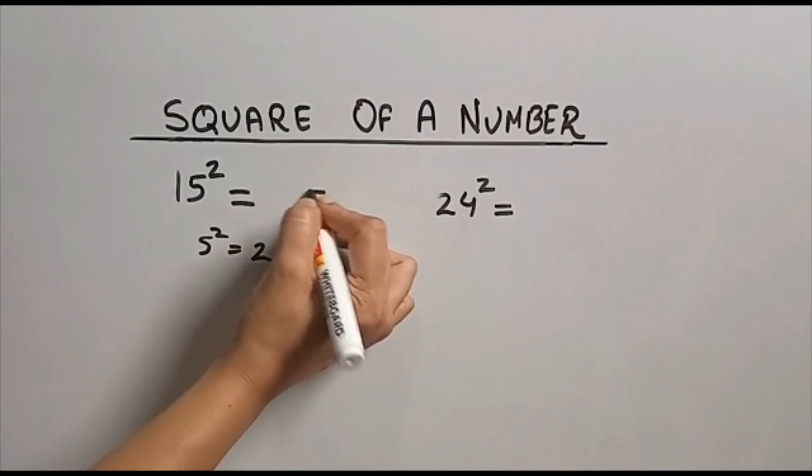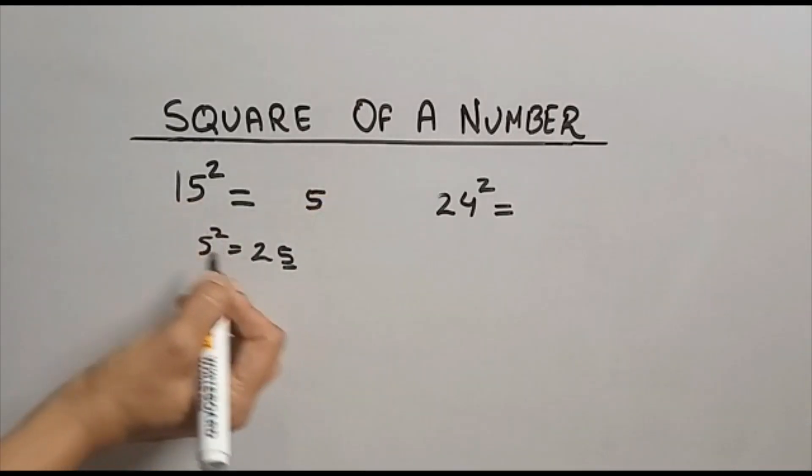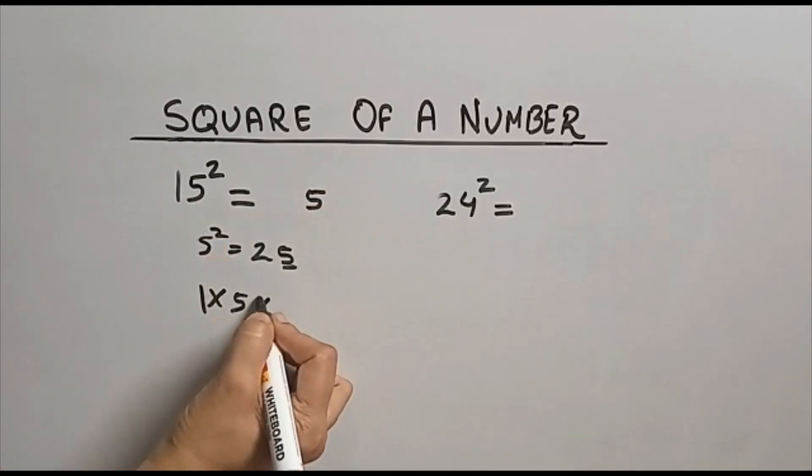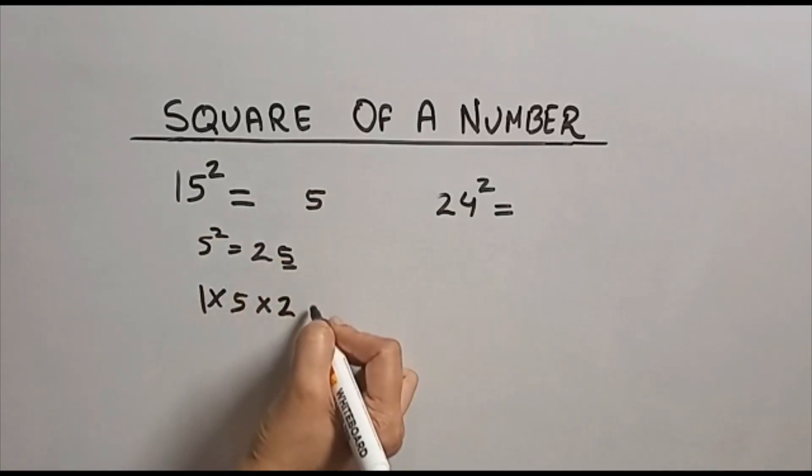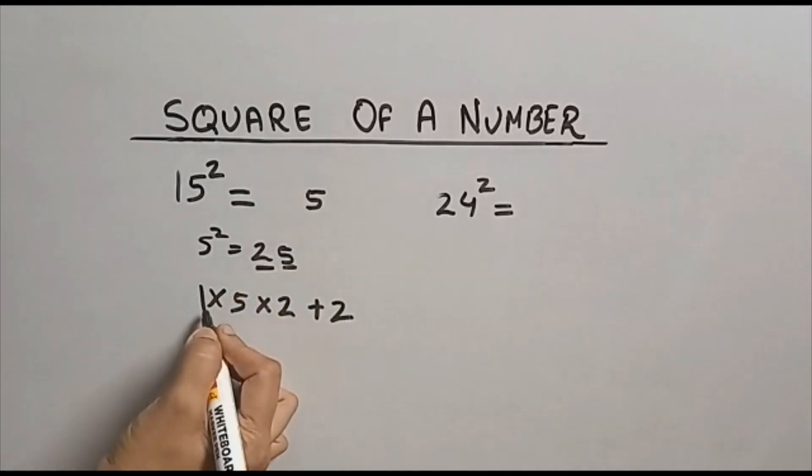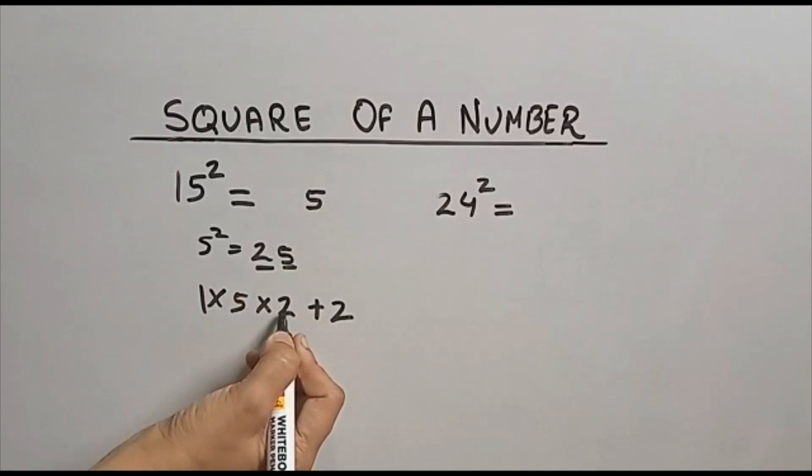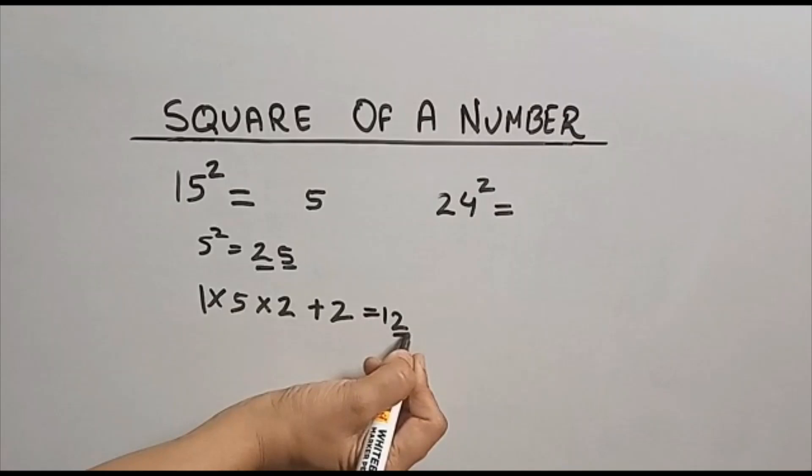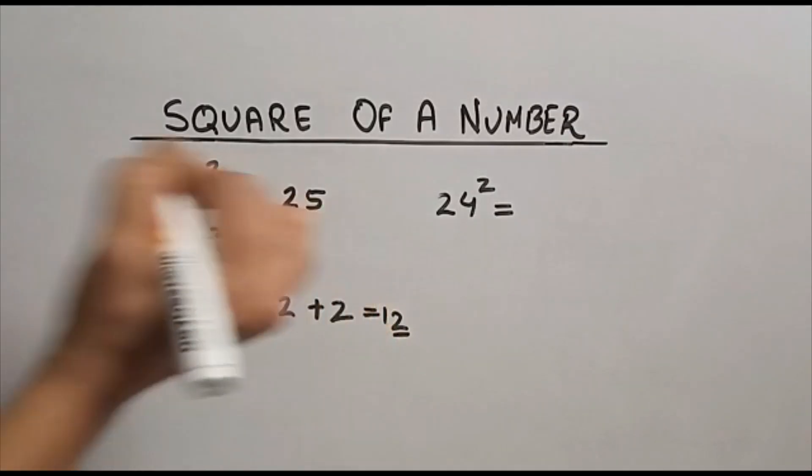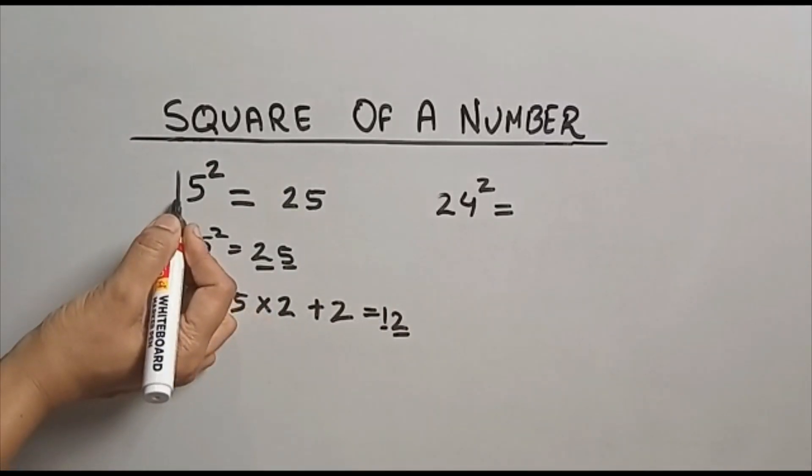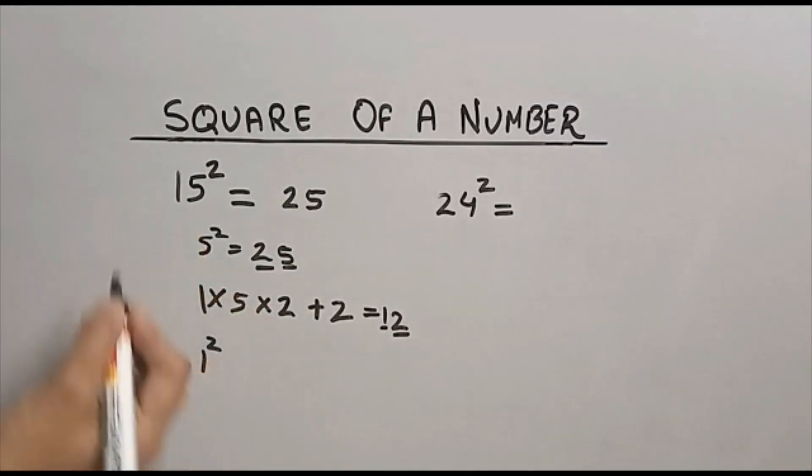This unit place I am writing here. Now I will multiply these two numbers: 1 into 5, now taking double of it, 1×5×2 plus this tens place. So 1×5 is 5, times 2 is 10, 10 plus 2 is 12. This 2 I am writing here at unit place. Now this 1 I am going to add with the square of this tens place: 1² plus 1 which is 2. So square of 15 is 225.